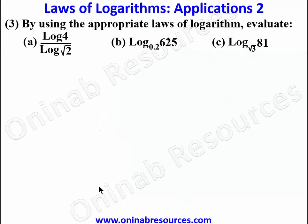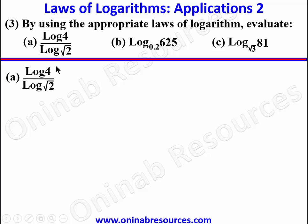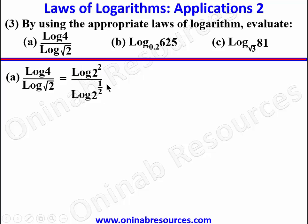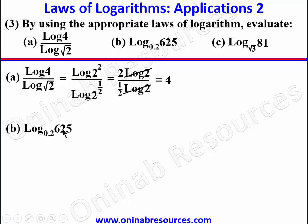For Problem 3a, we evaluate log 4 over log √2. We express 4 as an index form of 2, giving log(2²) over log(2^(1/2)). Bringing the powers down as coefficients, this becomes 2 log 2 over 1/2 log 2. The log 2 terms cancel, leaving 2 divided by 1/2, which equals 2 times 2, giving 4.